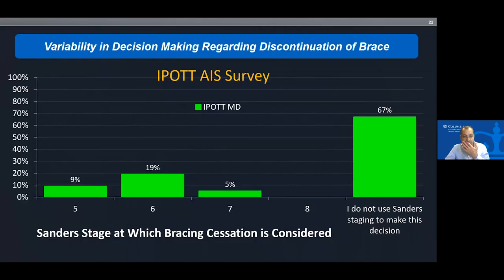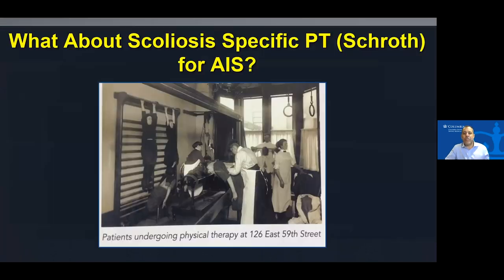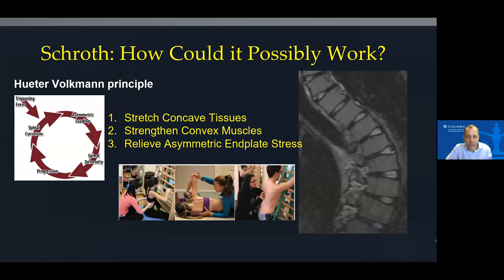In my view, you should only really be using digital hand X-rays, proximal humerus, or ulnar X-rays to make decisions about weaning initiation and cessation of bracing. Regarding Schroth physical therapy — just like treating any other joint, if you have a contracture of the knee you stretch the concave tissues and strengthen the convex muscles. In the growing child, you relieve the asymmetrical endplate stresses that result in the cycle of asymmetrical growth, increased loading, and increased deformity.